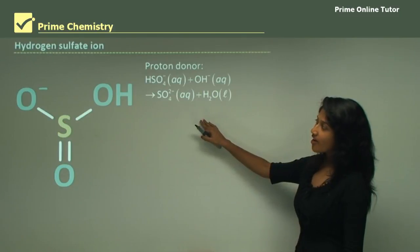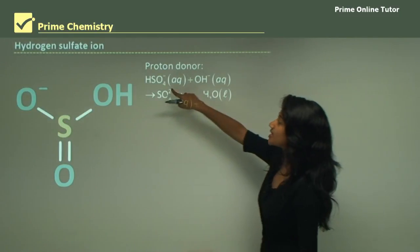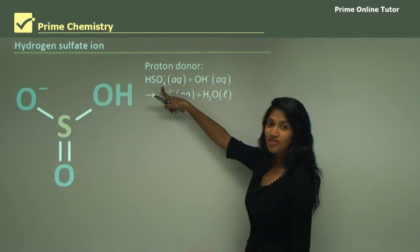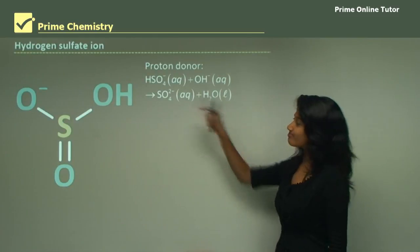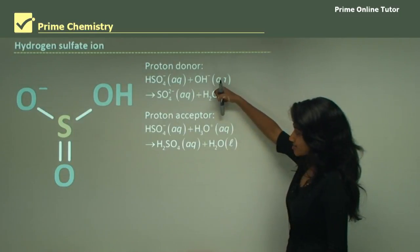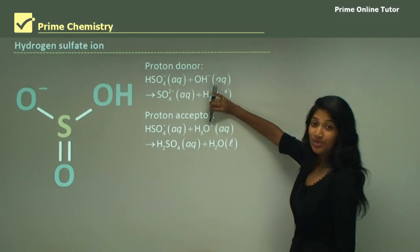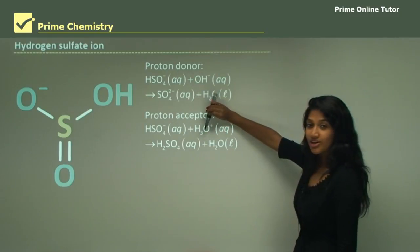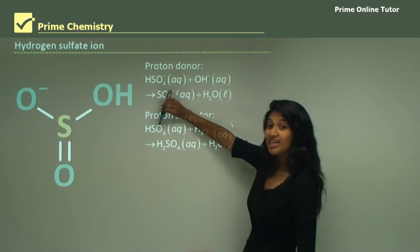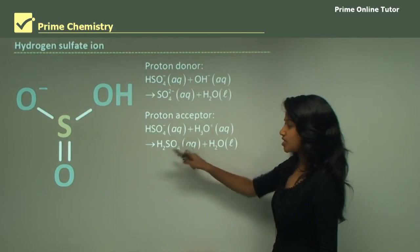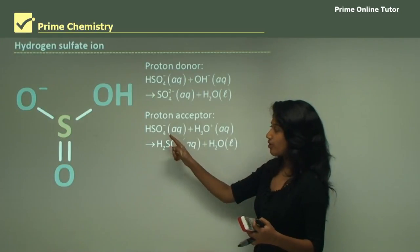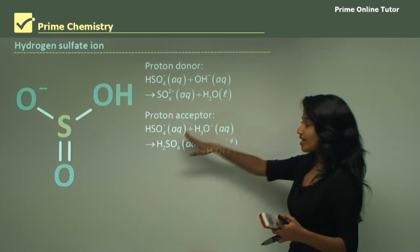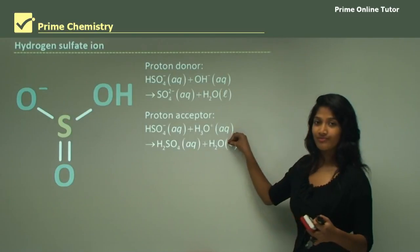Looking at the hydrogen sulfate ion acting as an acid: it's donating a proton to the hydroxide ion to form water, and the hydrogen sulfate ion forms a sulfate anion. When it's acting as a base, hydrogen sulfate reacts with the hydronium ion and accepts a proton this time. When the hydronium ion gives out a proton, it becomes water. When the hydrogen sulfate gains a proton, it becomes sulfuric acid. Note that when a species gains a proton it gains a charge, going from minus to zero, and when it gives away a hydrogen it loses a charge.